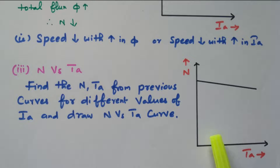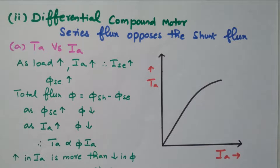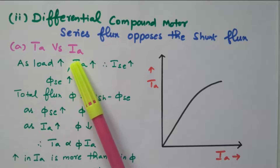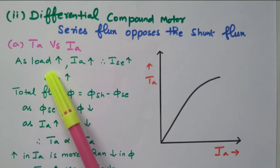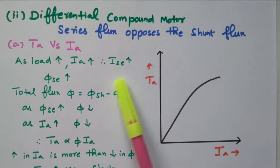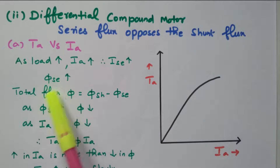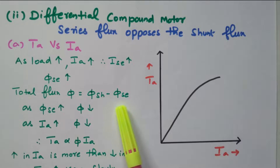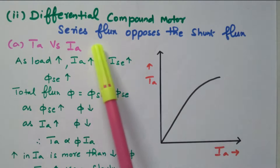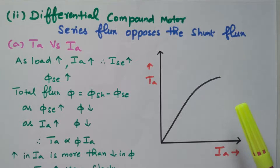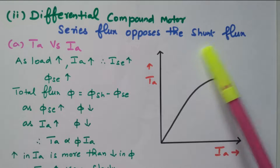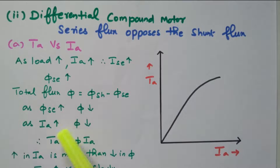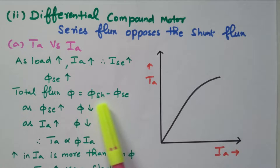Now we will go to the differential compound motor. First, the armature torque versus armature current. As the load increases, armature current increases, series field current increases, and series field flux increases. However, the total flux is φ_sh minus φ_sc, because in a differential compound motor the series flux opposes the shunt flux — they are subtracted. So when the series field flux increases, the total flux decreases.